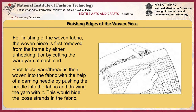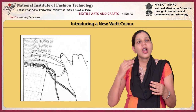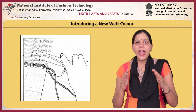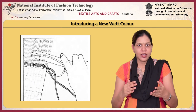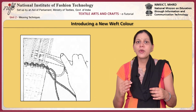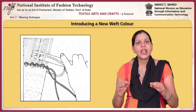For finishing of the woven fabric, the woven piece is first removed from the frame by either unhooking it or by cutting the warp yarn at each end. Each loose yarn or thread is then woven into the fabric with the help of a darning needle by pushing the needle into the fabric and drawing the yarn with it, hiding the loose strands in the fabric. A new colour can be introduced during the course of weaving at any point by adding a new weft in the second shuttle stick. Care must be taken to interlock those loose strands at the edges, ensuring neat edges and an effortless weaving process.